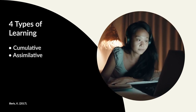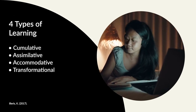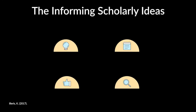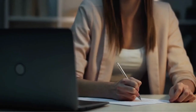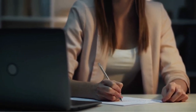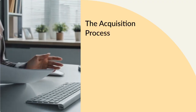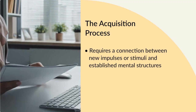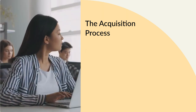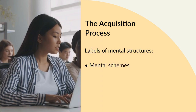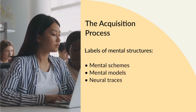These four types are cumulative, assimilative, accommodative, and transformational learning. The scholarly ideas that inform this Illeris learning typology emanate from behaviorism, cognitivism, social learning, and constructivism, along with the influence of developmental and gestalt psychology. Understanding these four brain functions relative to learning, thinking, and memory, the acquisition process requires a connection between new impulses or stimuli and established mental structures — referred to as mental schemes, mental models, or neural traces.